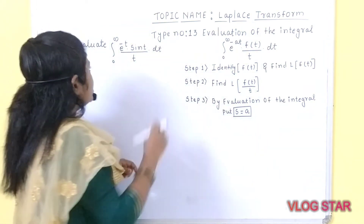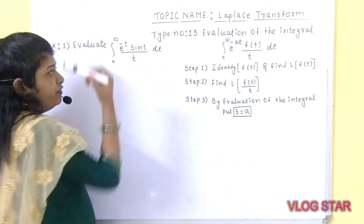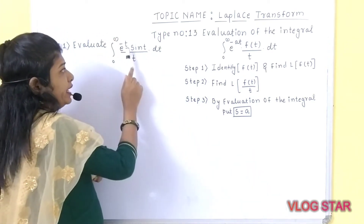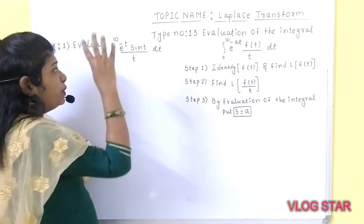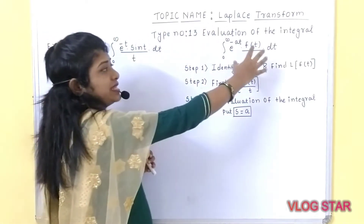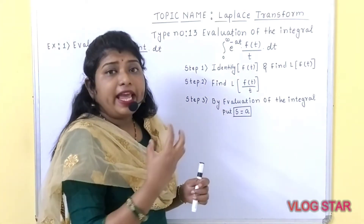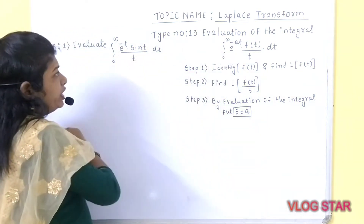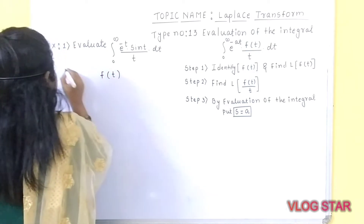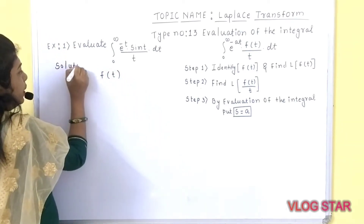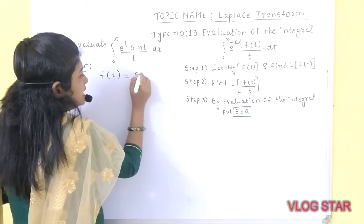To understand type number 13, let us consider one example. We have to evaluate the integration of 0 to infinity of e raised to minus t into sin t upon t into dt. Simply you have to equate this particular example with the standard result. As per step number 1, we have to identify f of t. If you equate with the standard result, f of t is nothing but equal to sin t.